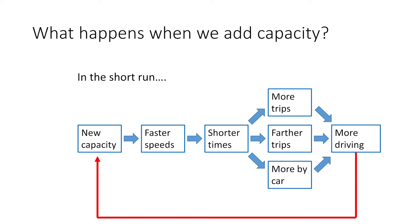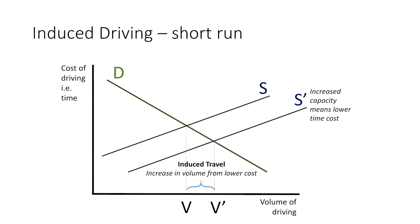And then, of course, more driving creates more pressure for more capacity, so we end up in a vicious cycle. We can also explain induced driving using basic Econ 101 principles of supply and demand. On the x-axis, we've got the volume of driving. On the y-axis, we've got the cost of driving — in other words, the travel time. That's the main cost of driving. And the volume of travel we observe on the road is where the demand curve and the supply curve cross.